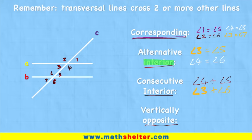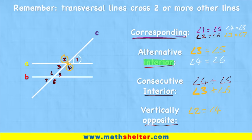Now let's look at our final one: the vertically opposite angles. This is not saying interior, so we can talk about all eight angles again. We're looking for an angle that's opposite from the point where the angles meet. If I look at angle two, look at the angle point and then look opposite, I can see angle four. Angle two and angle four are equal. We can also say angle one is vertically opposite angle three, and they are equal. Angle five is opposite angle seven, and they are equal. And finally, angle six and angle eight are also vertically opposite, and they are also equal.